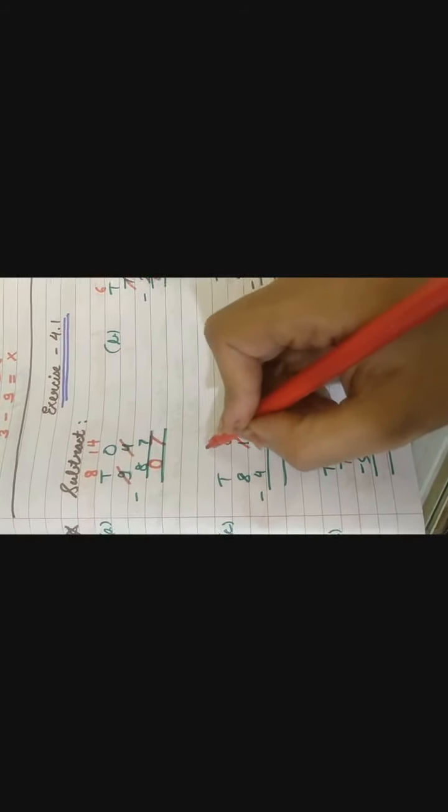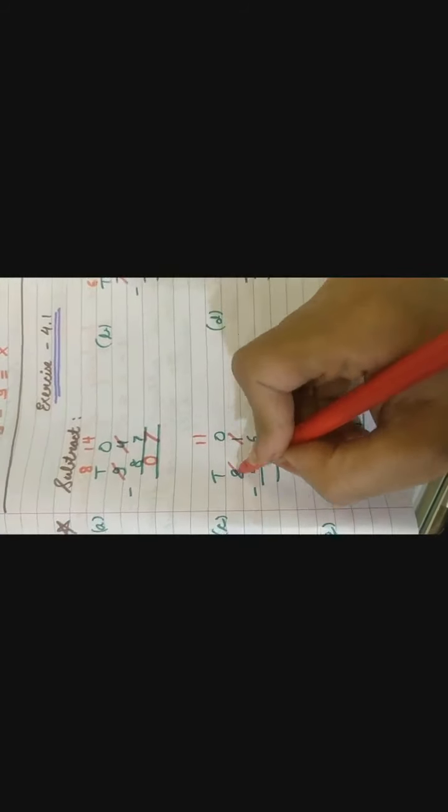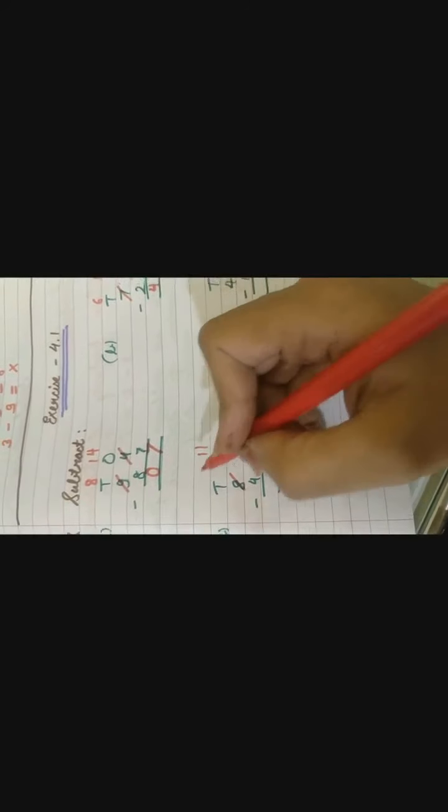Now the next. 81 minus 46. Kya 1 me se 6 chala jayega? No. So what we will do? We will do borrow. 11 ho gaya. Because we have taken 1 from 8. Aur idhar kya bacha? 7. Good.